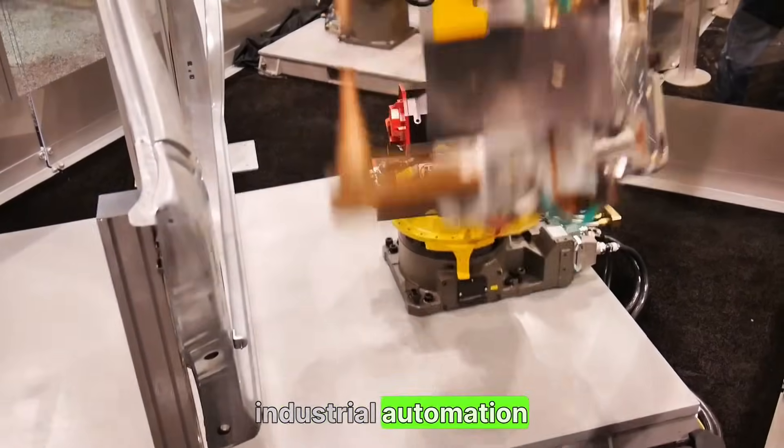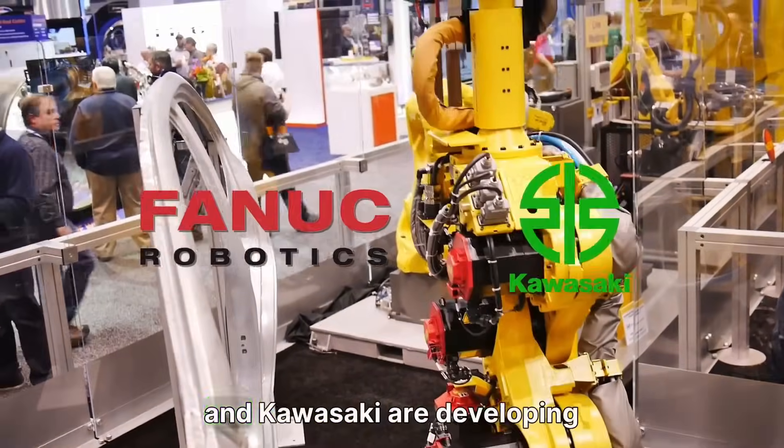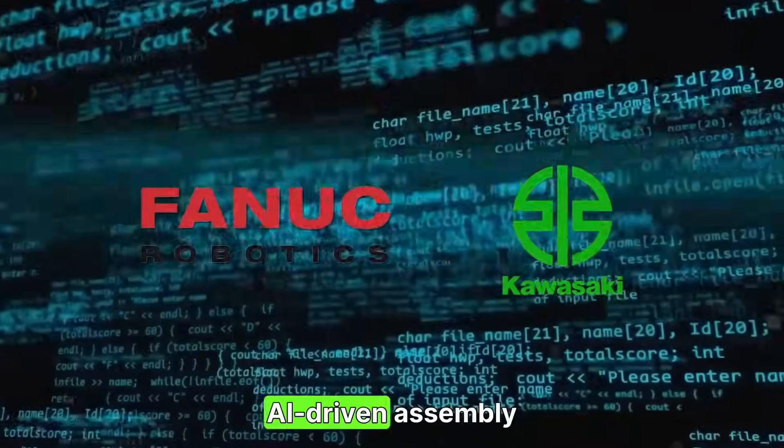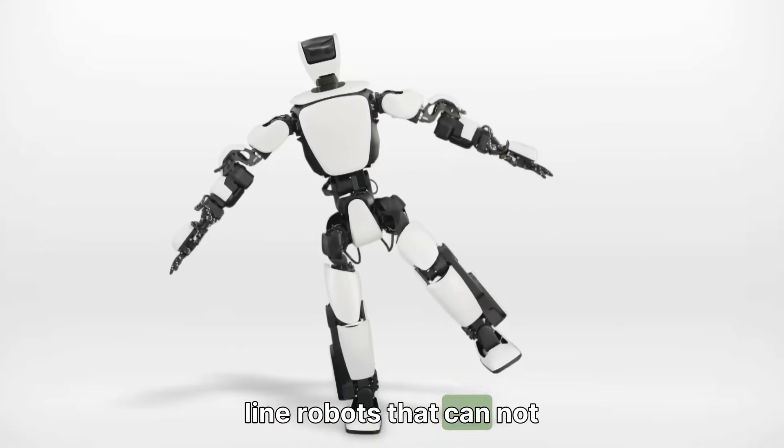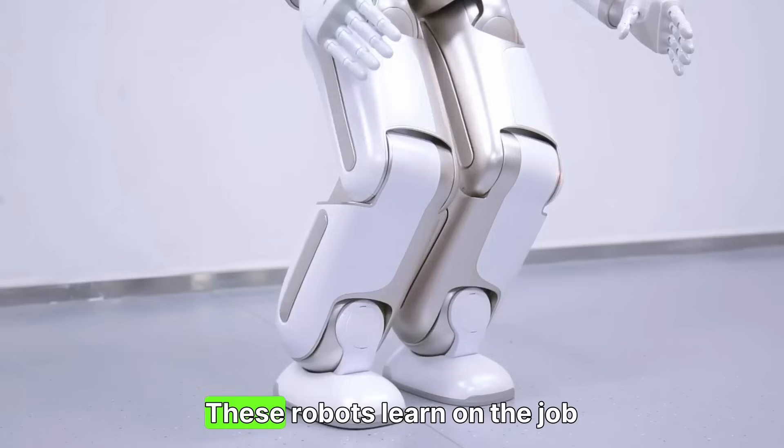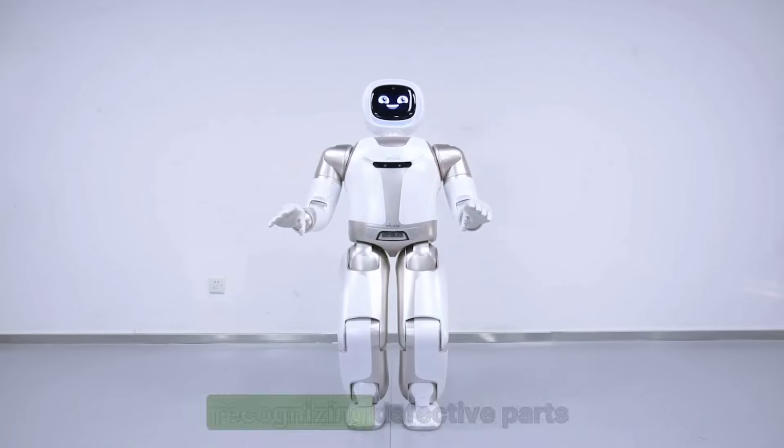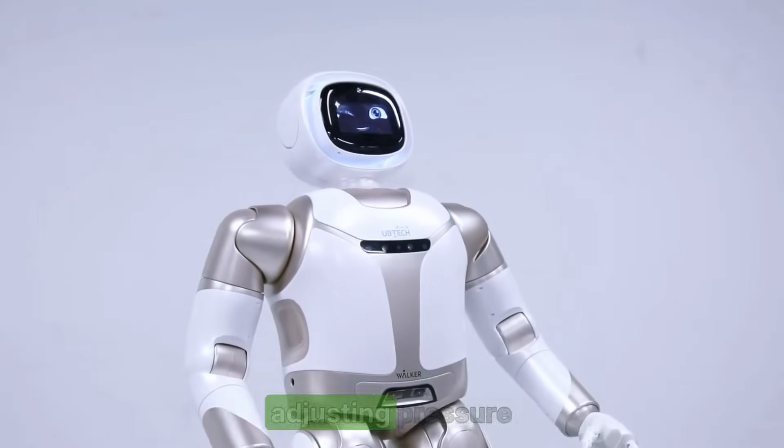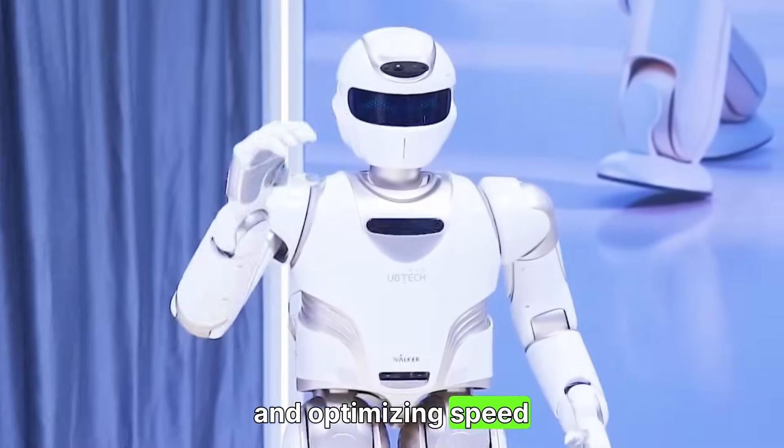Next, let's talk industrial automation. Companies like Fanuc and Kawasaki are developing AI-driven assembly line robots that can not only execute repetitive tasks, but adapt in real time. These robots learn on the job, recognizing defective parts, adjusting pressure, and optimizing speed.